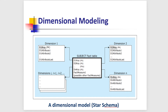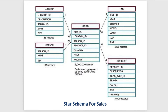A typical star schema has a fact table in the center, which is connected through foreign keys to the dimension tables. We can also have more than one fact table, but in this video I'm going to focus on a simple star schema with only one fact table. This is a sample star schema for sale, with dimensions such as location, time, product, and person or customer.